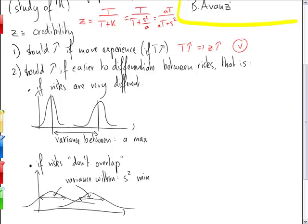Now, if the variance between risks increases, which is what we want, or the higher the better, then this means that K will decrease. K is S squared over A. And this means that Z will increase, which is what we wanted. Also, if you look at this expression, it's obvious that if A increases, Z goes to 1.